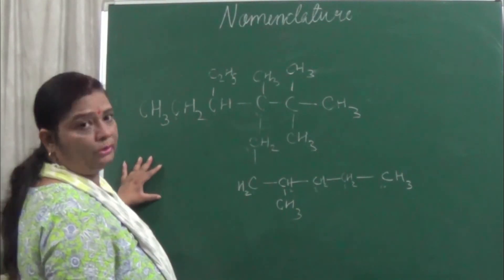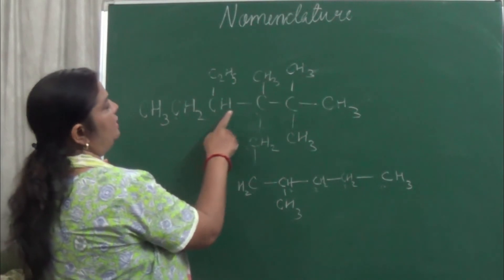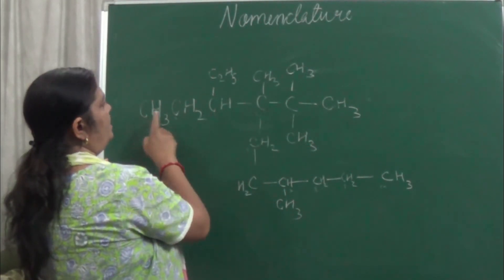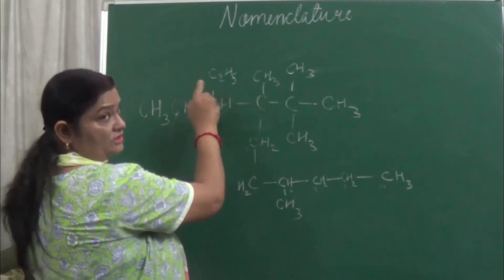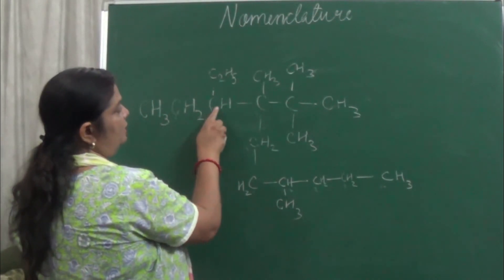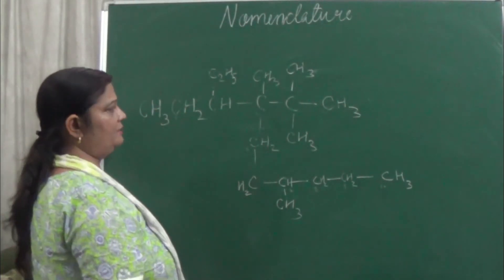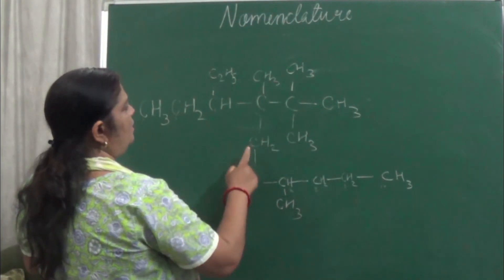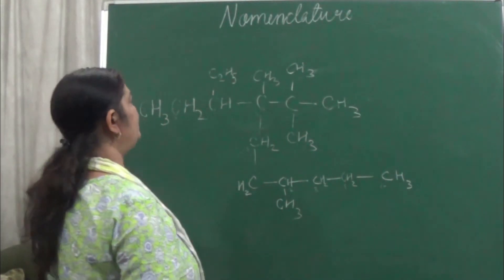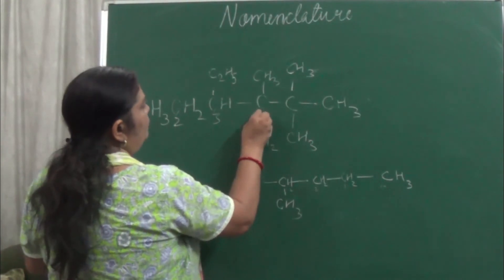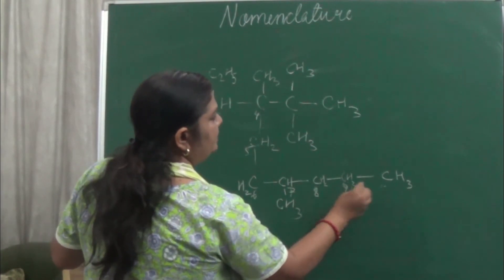Now let us take the example of a complex chain. First rule: find the longest chain. Counting from one direction gives 6, another gives 5, another gives 5 as well. But counting from a particular direction gives 10 carbons, while another gives only 9. Since 10 is more than 9, we take that direction: 1, 2, 3, 4, 5, 6, 7, 8, 9, 10. Parent chain is decane.